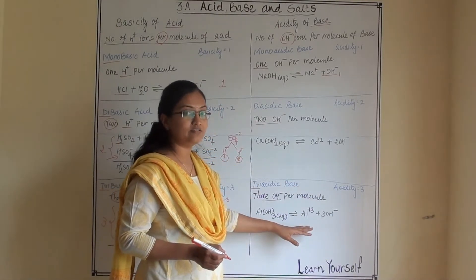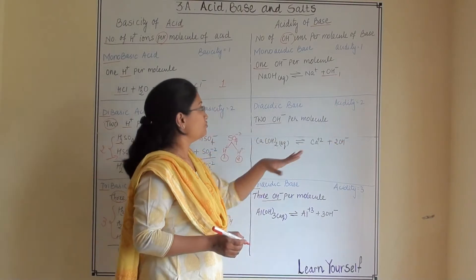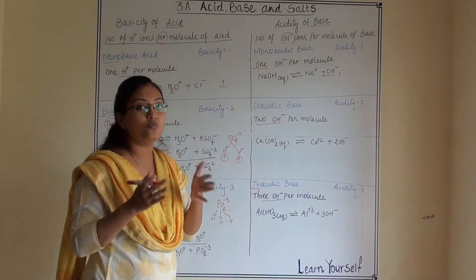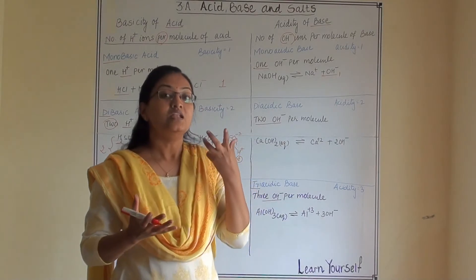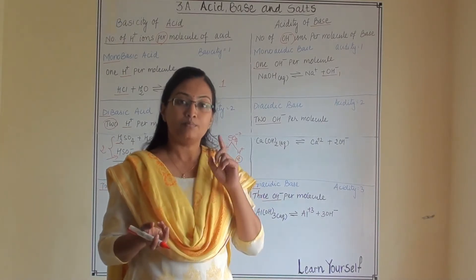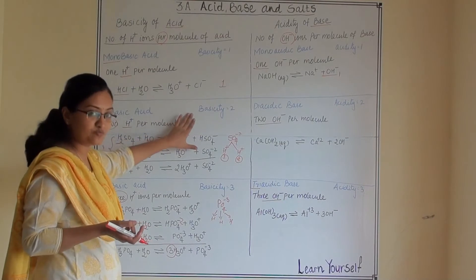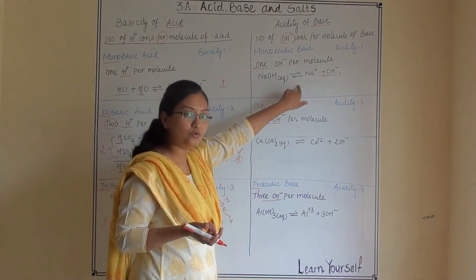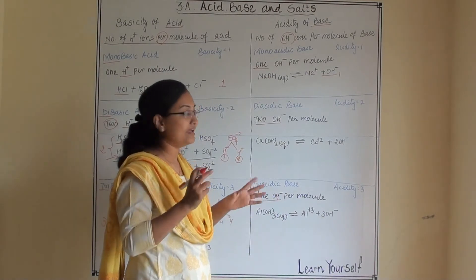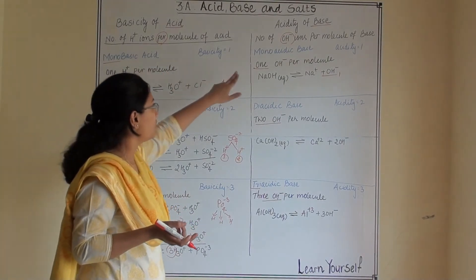If a base gives three hydroxyl ions, the acidity is three; if it gives two, the acidity is two. The basic concept of basicity of acid and acidity of base is about how many steps they dissociate in, and how many H+ or OH- ions are generated per molecule. One H+ gives basicity one; two OH- gives acidity two; three H+ gives basicity three. Accordingly, acids and bases are called mono, di, and tribasic or acidic.